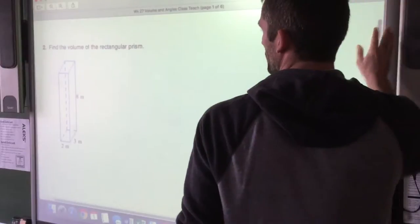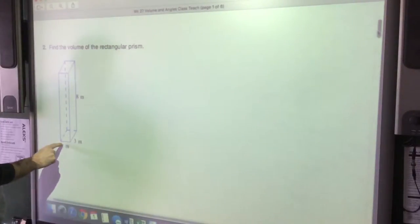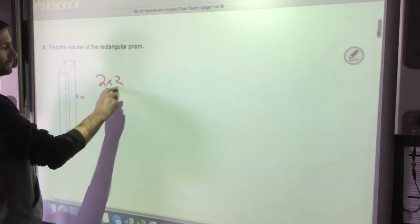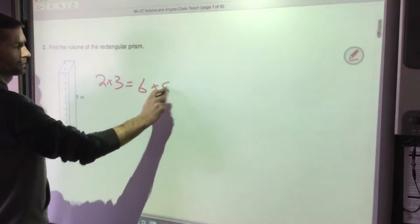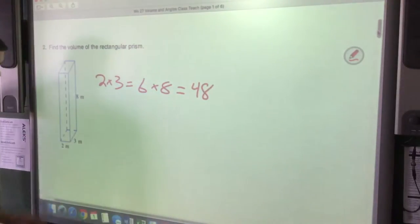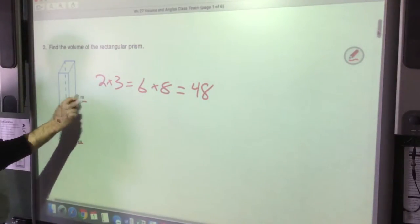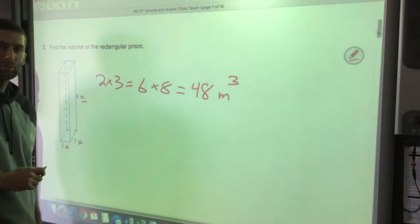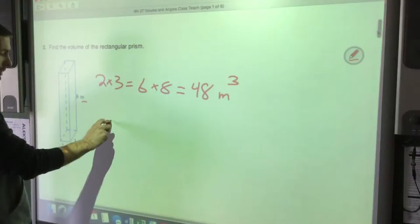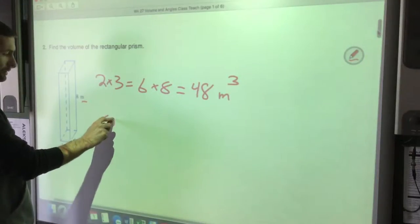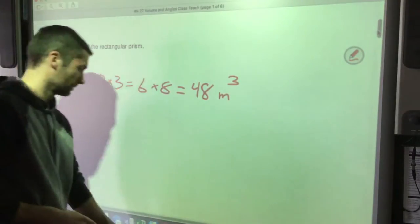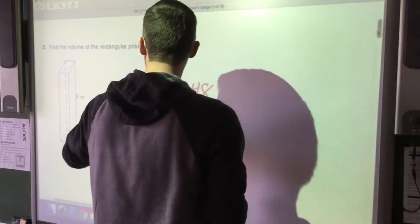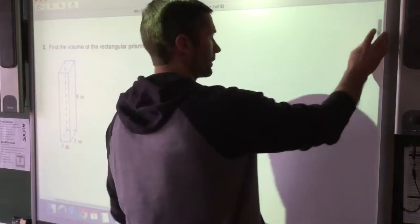Last week we did surface area. Find the volume of this. Okay, so two times three times eight. Two times three is six, six times eight is 48. That's meters times meters times meters, so meters cubed, meters to the power of three because we're doing three-dimensional blocks here. I know you can probably do that one in your head. I do want to see you write that down on your homework paper though.